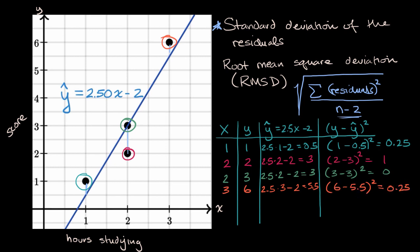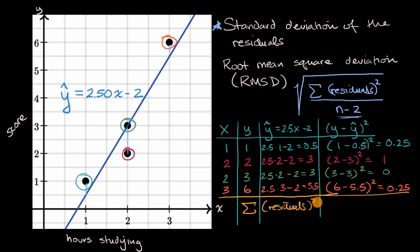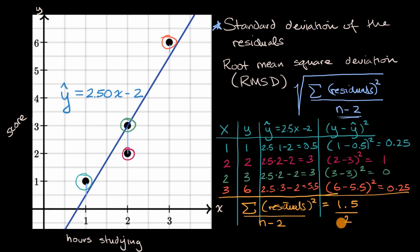Now let's take the sum of all the squared residuals. The sum of the residuals squared equals 1.5. Dividing by n minus two — I have four data points, so I divide by four minus two, which is two — and then taking the square root: 1.5 over two is the same as three-fourths, so the result is the square root of three-fourths, or the square root of three over two.